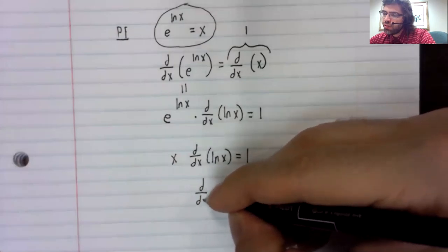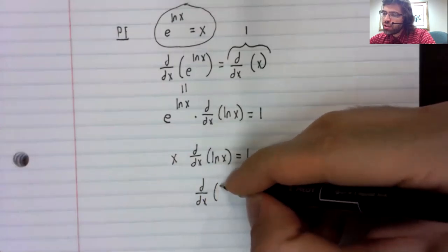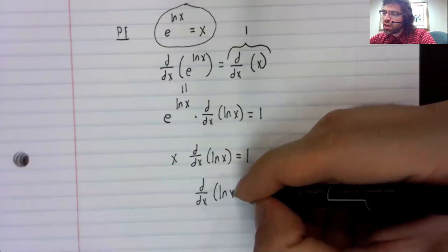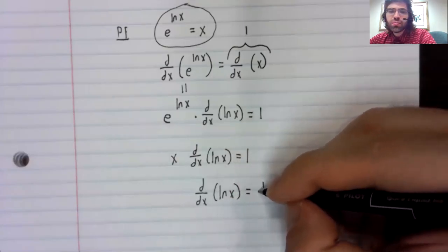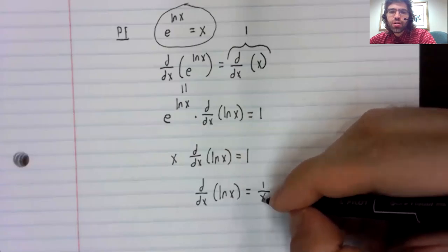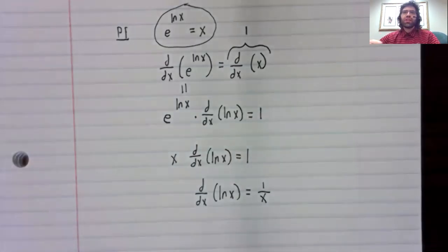And if we divide both sides of this by x, we get that the derivative of the natural logarithm of x is one divided by x, just as we said it was.